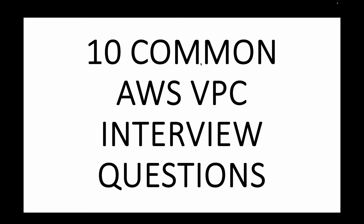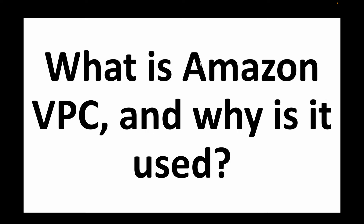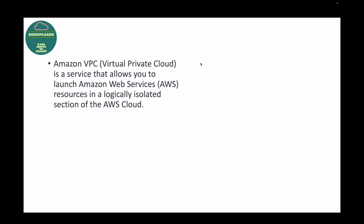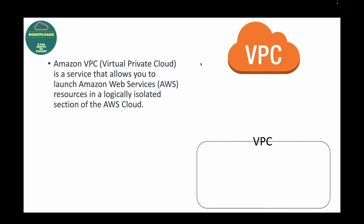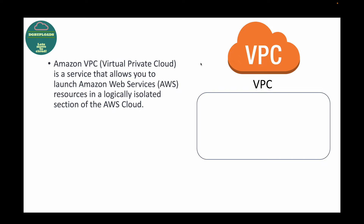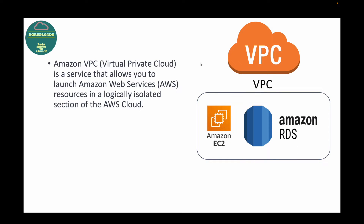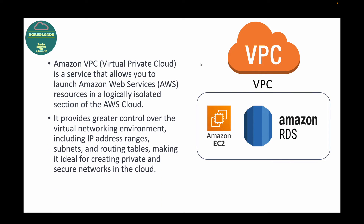The first question is: what is Amazon VPC and why is it used? VPC stands for Virtual Private Cloud and it is basically a service that allows us to launch our AWS resources in a logically isolated section in the AWS cloud. So if you want to create an isolated section so that your resources do not talk with services in a different network, we can make use of VPC — for example, launching an EC2 instance or an RDS database in an isolated section.